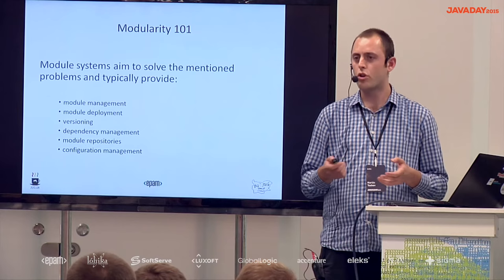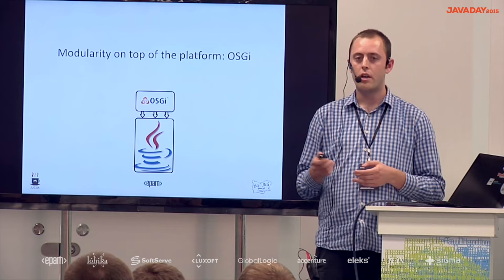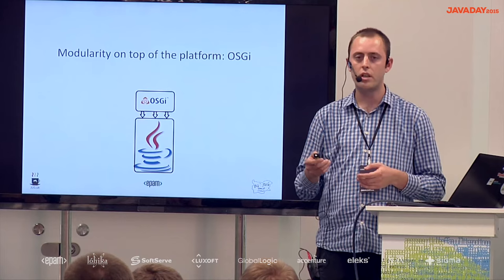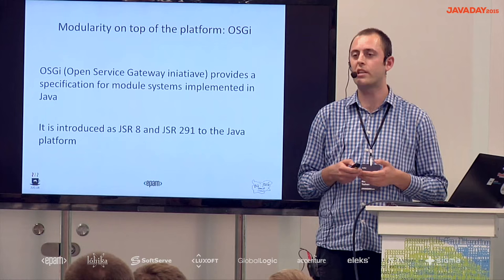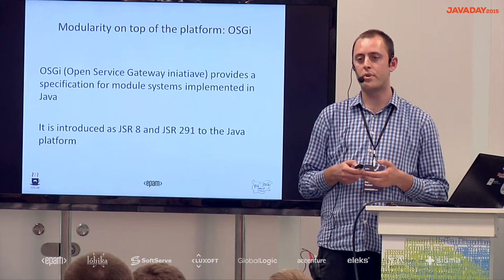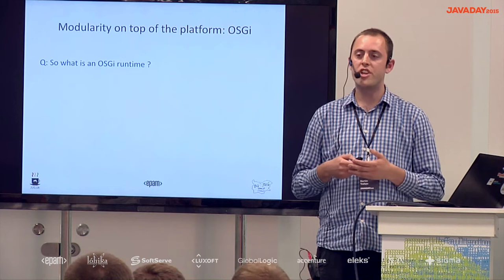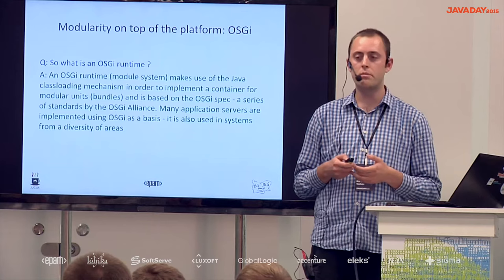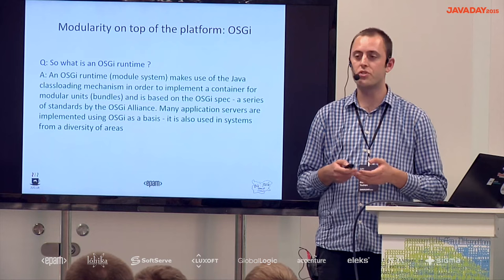One solution that many applications currently use is the OSGI specification. As many of you pointed out, you've heard of OSGI — it's already a very mature technology and continues to evolve rapidly. OSGI, or the Open Services Gateway, is an open specification that specifies how to implement a module system running on top of the Java platform. It was introduced as part of the standard JCP process via JSR 8 and the newer JSR 291. An OSGI runtime makes use of the standard Java class loading mechanism, providing a specification for loading modules, managing their lifecycle, and packaging them as so-called bundles.